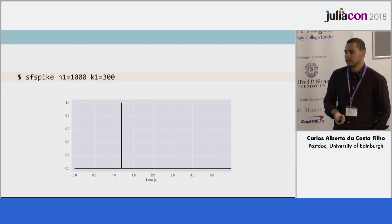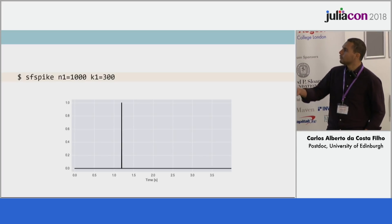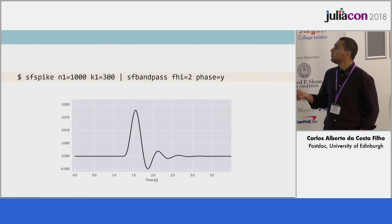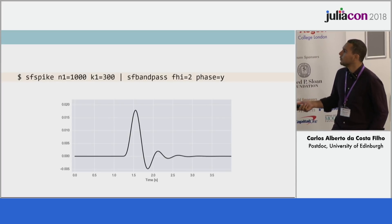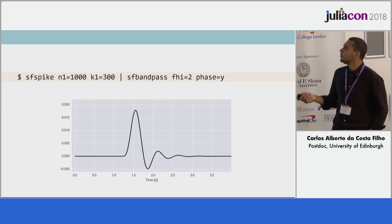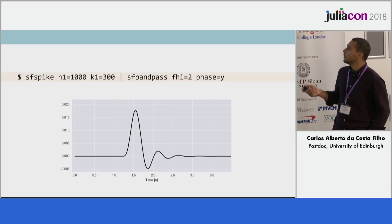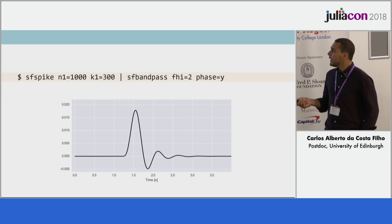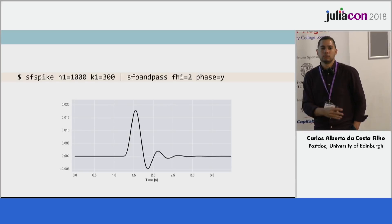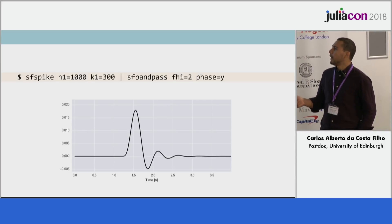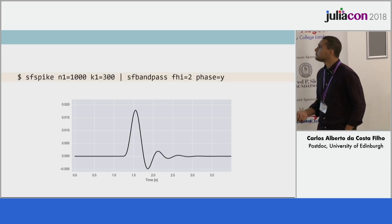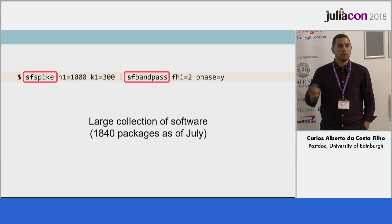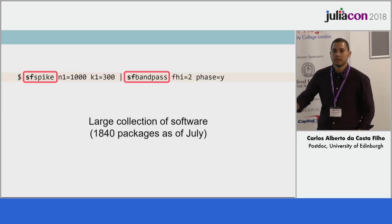One of the interesting things Madagascar does is that, in the UNIX philosophy, it can pipe things into other programs. Here we take the spike and pipe it into SF bandpass, which bandpasses our signal to a maximum of two Hertz — in the case that we're using seconds as the unit. We now obtain a new data set created from piping one program into the other.